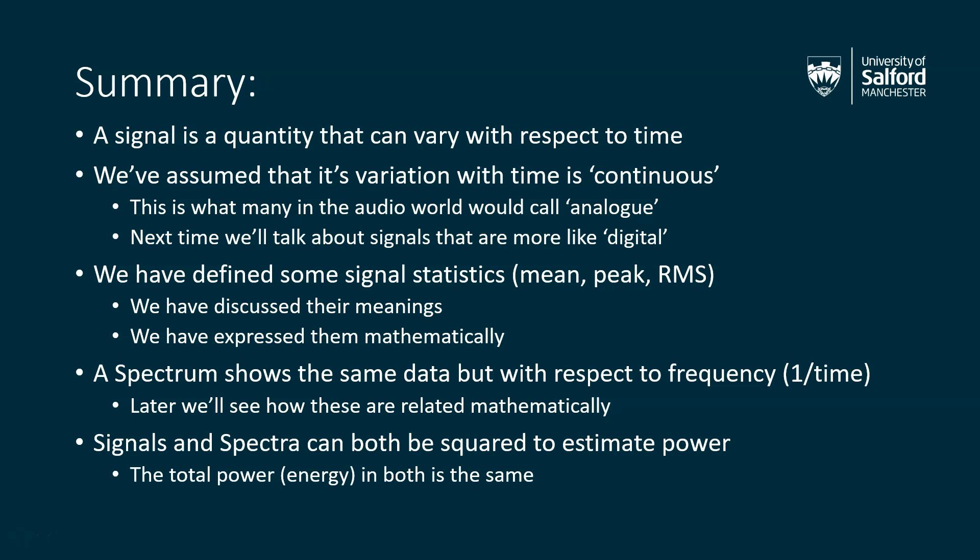And spectrum shows the same data, but with respect to frequency, which is one over time. It's how fast things are varying instead of how long they take. And later on we'll see how these are related mathematically in one of the later talks in this series. Finally, we've seen that signals and spectra can both be used, they can both be squared to estimate the power, and the total power in both is the same because they're just different ways of showing the same data. So I hope you found that interesting, and please do watch out for the next talk on sample data. Thank you.